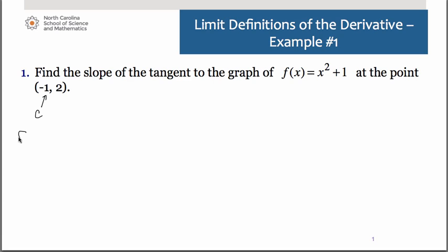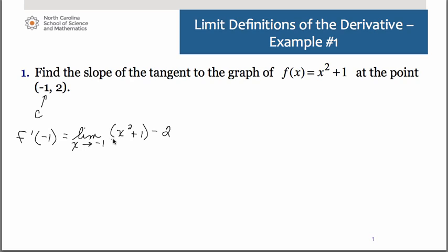So we are specifically trying to find the derivative at negative 1. According to that second limit definition, it's going to be the limit as x approaches negative 1 of the function itself, f of x, minus f of negative 1 — which is, in this case, 2 (we are given that in the ordered pair) — and that's going to be over x minus the c value. So in this case, that becomes x plus 1.